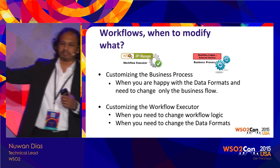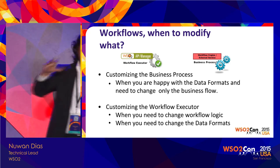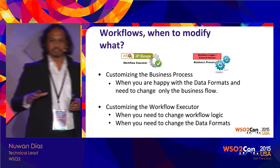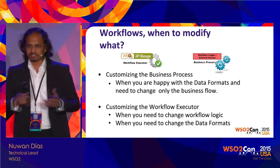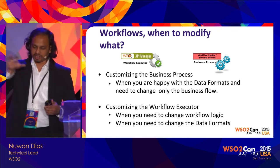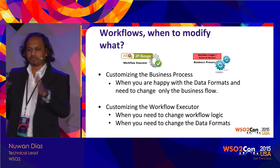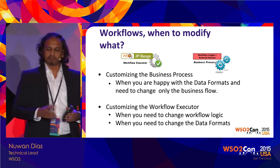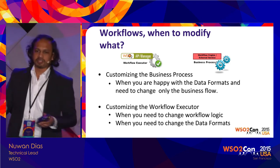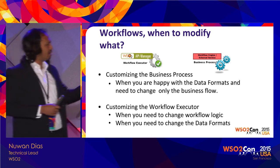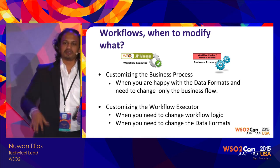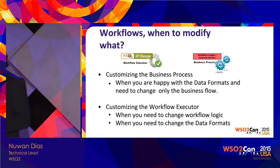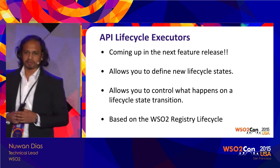Sometimes people get confused about where to modify the workflow process. The workflow executor on the Store triggers an external workflow on the Business Process Server. If you're okay with the data formats going out from the API Manager and only want to change the approval process or add more steps, you only need to modify the external business process. If you want data formats or structures changed, or additional information passed, only then should you consider having an internal workflow executor. For example, to simply send an alert on API subscription, you could use only an internal workflow executor.